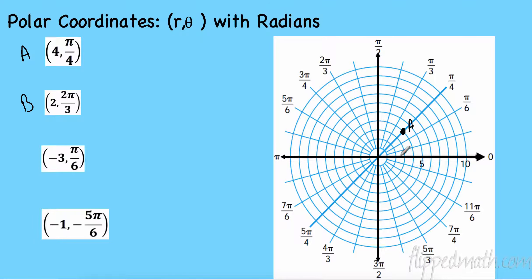Let's do point B: 2 pi over 3, radius 2. Go to 2 pi over 3 and then out 2 — that's 1, 2. Now point C: pi over 6, negative 3. Pi over 6 is right here, but since the radius is negative 3, I go 180 degrees opposite — which is 7 pi over 6 — and count out 3: negative 1, 2, 3. That's point C. It's tricky because you add pi in radians to go 180 degrees opposite.